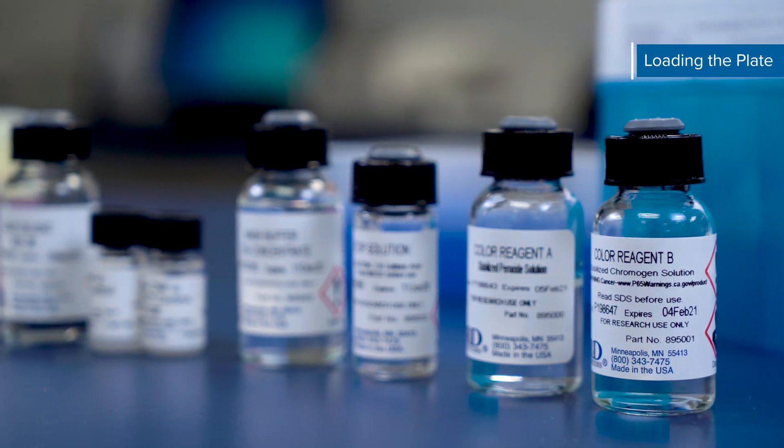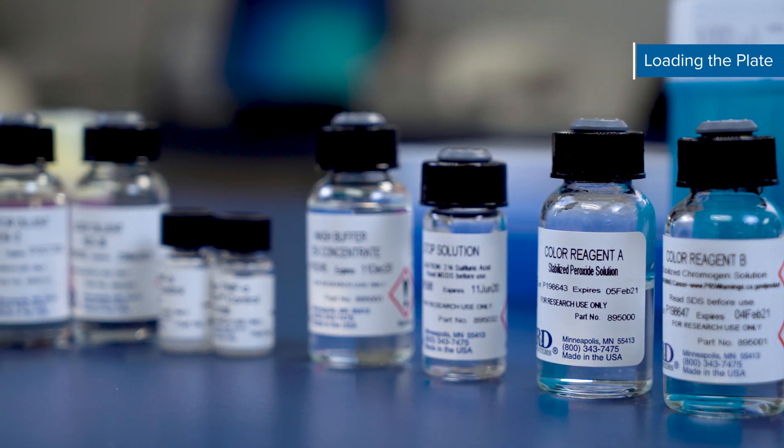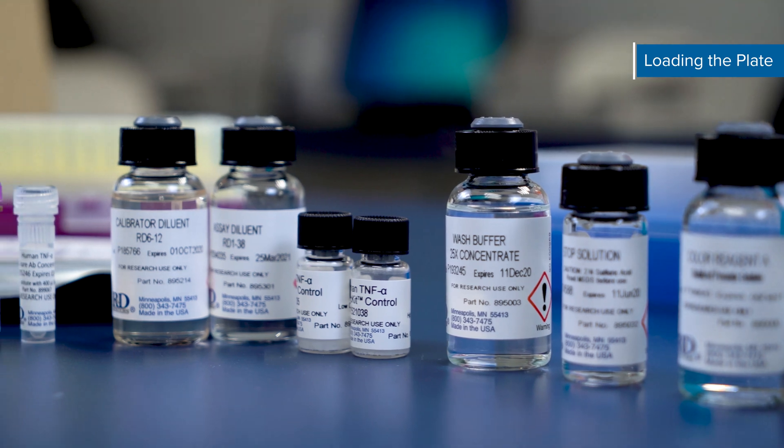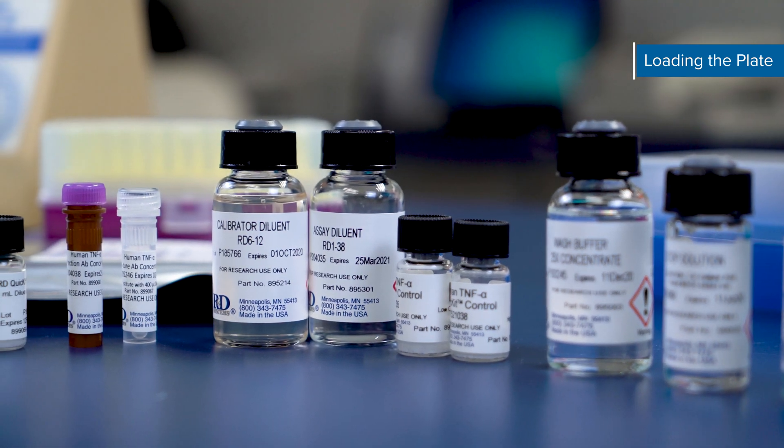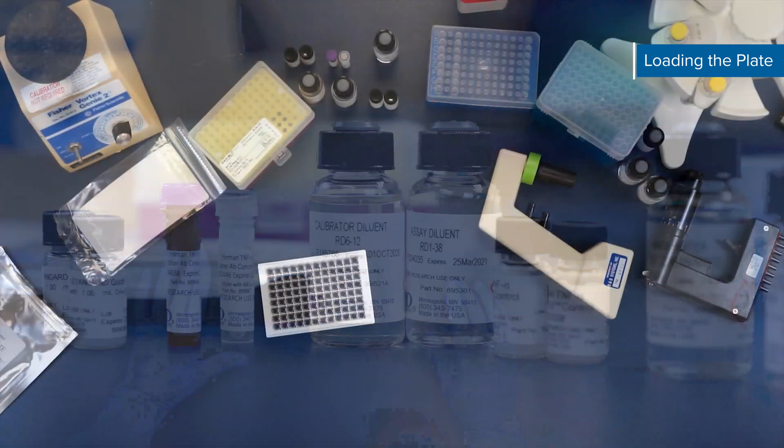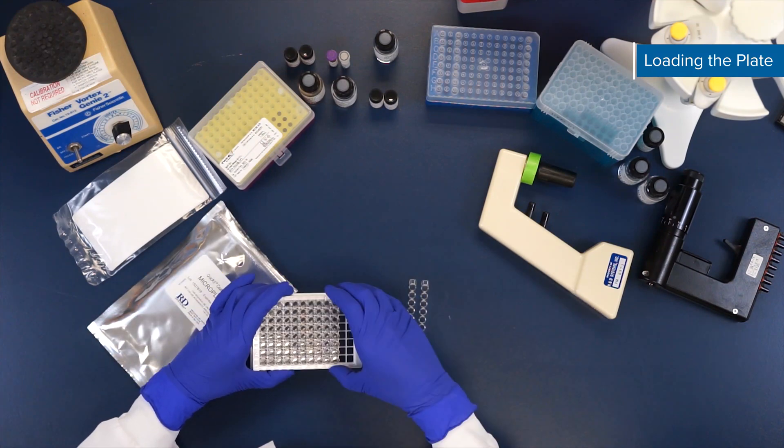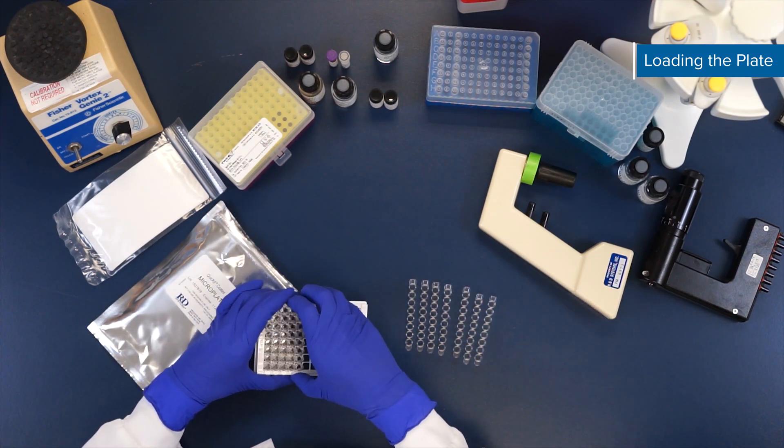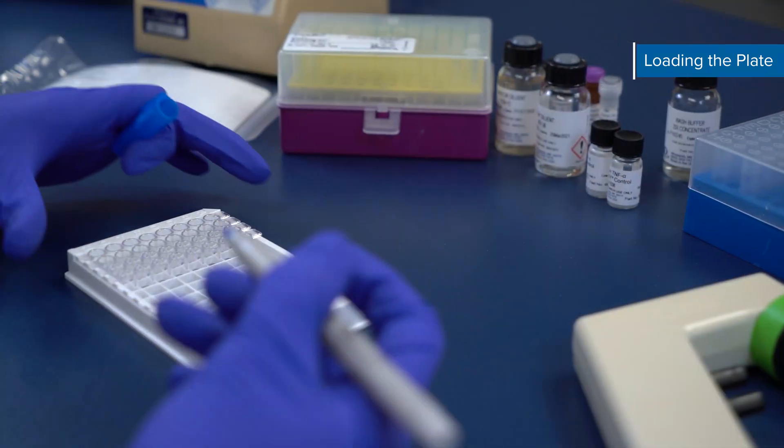Once you've prepared your samples and reagents as directed in the previous sections, it's time to run your QuickKit ELISA. We recommend that all samples, controls, and standards be assayed in duplicate. Remove excess microplate strips from the plate frame, return them to the foil pouch containing the desiccant pack, and reseal. We recommend labeling your plate strips.